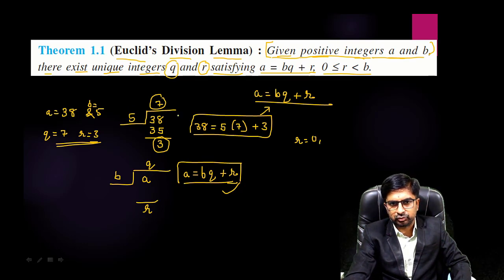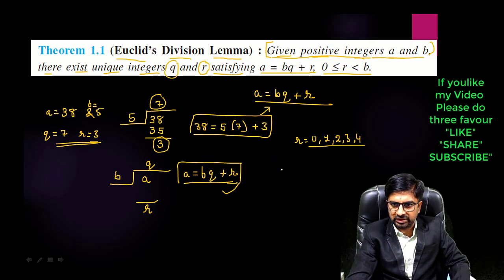Every time you will get remainder starting from 0 but less than your divisor. So your divisor is 5, so your remainder will be 0, 1, 2, 3, or 4. Out of these you will get any one as your remainder.